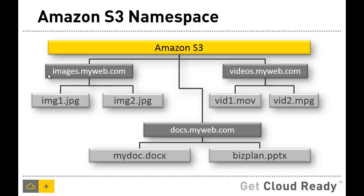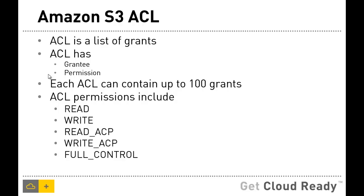If you are wondering how to secure the data, that's where we have what is called an access control list, or ACL. An ACL is essentially a list of grants and permissions. Every ACL has a grantee and a set of permissions, and each ACL can contain up to 100 grants. You can secure an object by selectively creating ACLs around read, write, and full access. You can also enable others to control the permissions. Once you create buckets and populate them with objects, you secure them by configuring the appropriate ACLs.